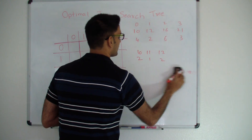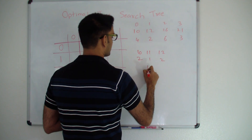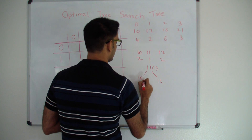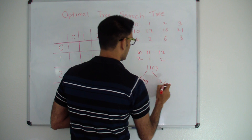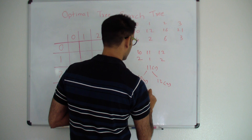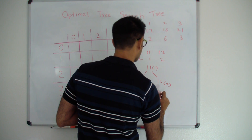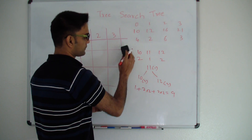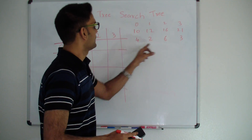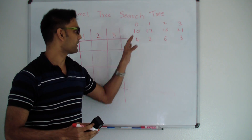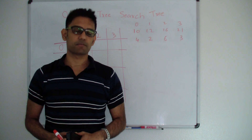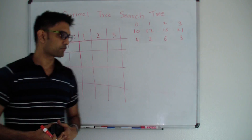If I had arranged my binary search tree in a different fashion, with costs 1 at the root, 2 into 2, and 2 into 2, the total cost of searching would be 9. So this is better than the previous arrangement. Basically, given a bunch of keys and the frequency at which they are searched, how would I arrange them into a binary search tree such that the cost of searching is minimum? We'll use dynamic programming to solve this.